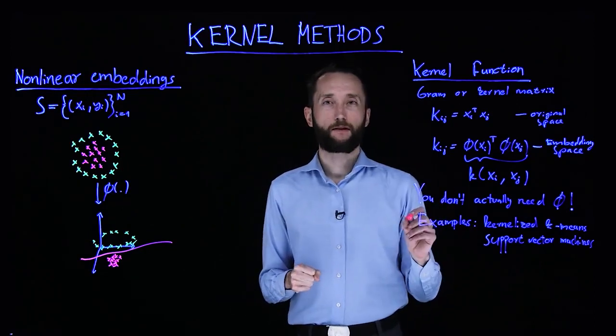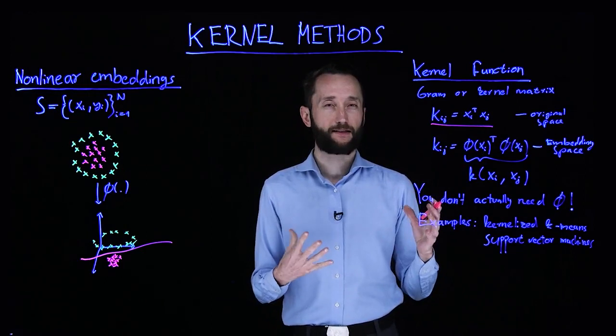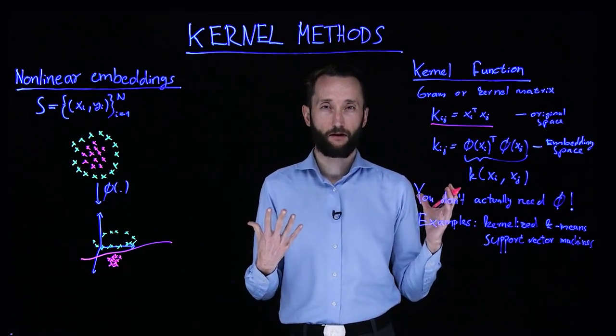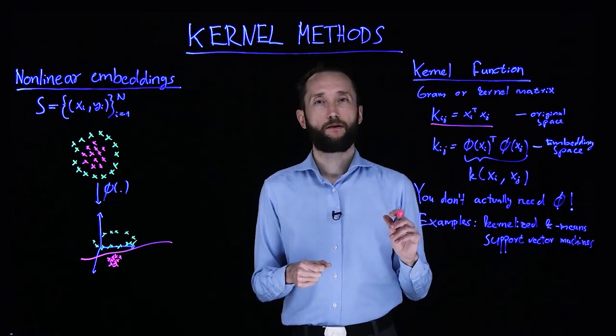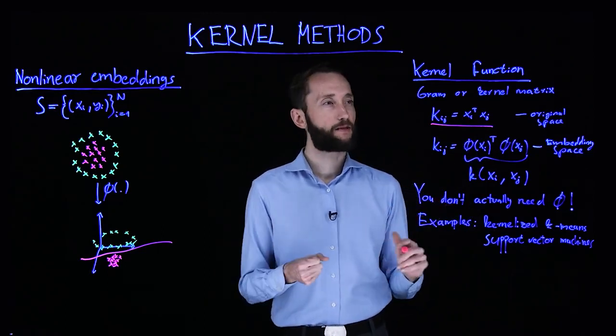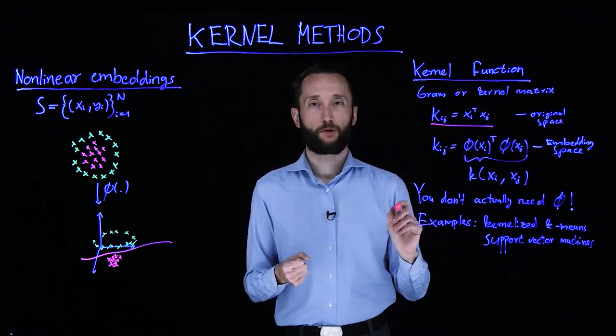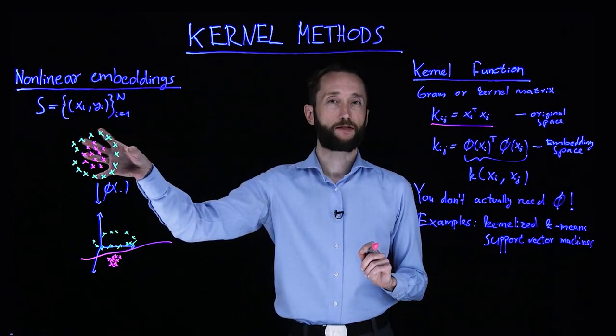So when we talked about clustering, we talked about the gram matrix. In this context, this is also going to be called the kernel matrix, which characterizes distances or similarities between points in the high-dimensional space. For instance, by the inner product between the vectors. So this would be the inner product in the original space.